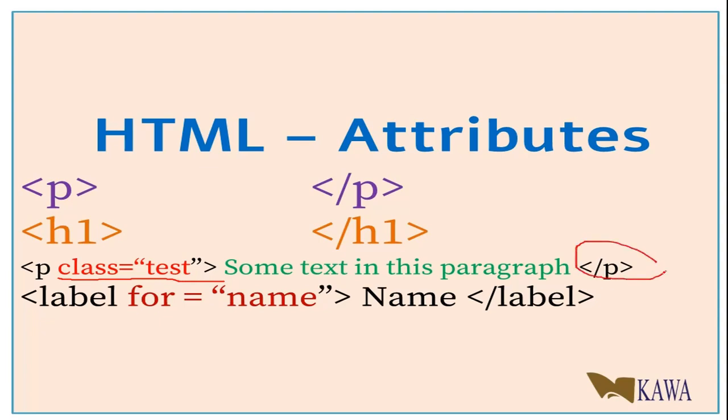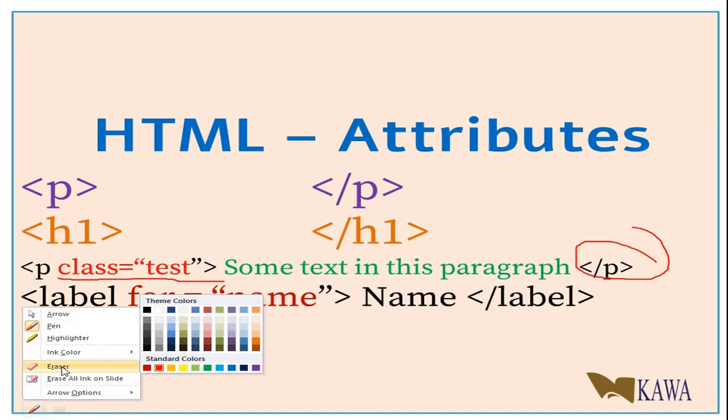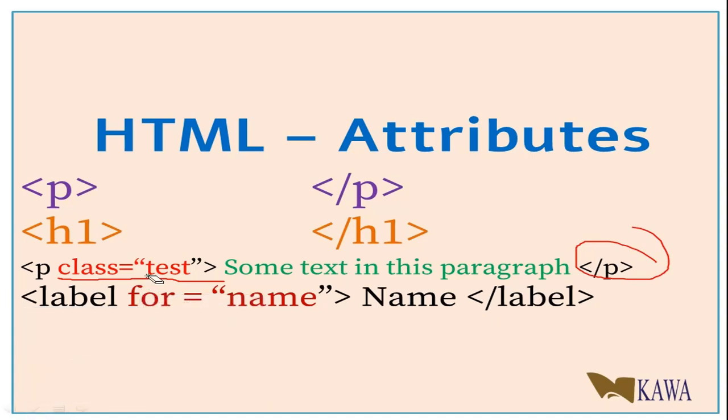That's how attributes work. I can also introduce another attribute here called label. The label tag has an attribute called for. I purposely introduced that because I didn't want to get mixed up.